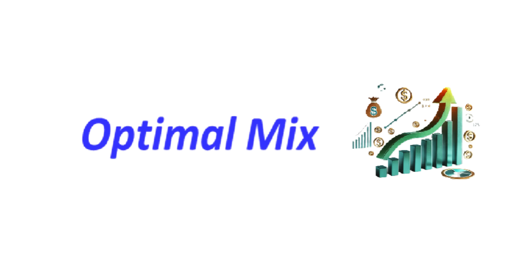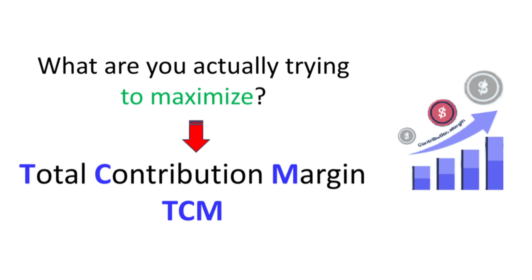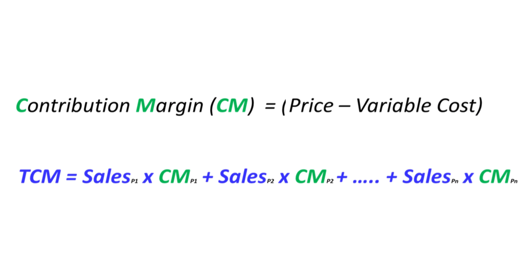And finding that mix means you need an objective — what are you actually trying to maximize? In this case, it's the total contribution margin, or TCM. Think of it like this: for every ton of steel you sell, you get a price. Then you subtract all the costs that change directly with production — raw materials, energy, that sort of thing. Variable costs.